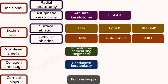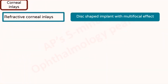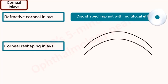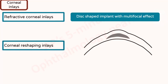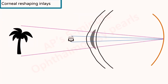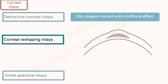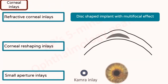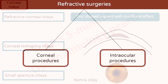Corneal inlays are implants placed in the corneal stroma for correction of presbyopia, and are of different types based on their mechanism of action. Refractive corneal inlays are disc-shaped implants that behave like multifocal lenses, where the central neutral zone allows distant rays to focus on the retina and paracentral zones with converging power focus light from near objects. Corneal reshaping inlays have no refractive power but steepen the central cornea, allowing near objects to focus on the retina while distant rays travel through the peripheral part. Small aperture inlays are ring-shaped implants with a small central aperture that behaves like a pinhole, improving depth of focus — the KAMRA inlay is the classical example.